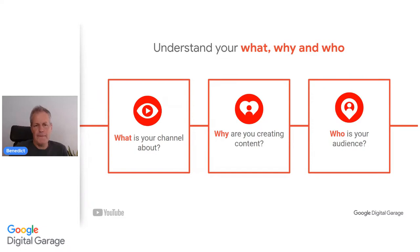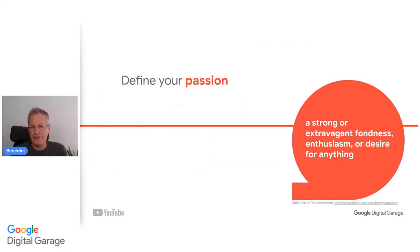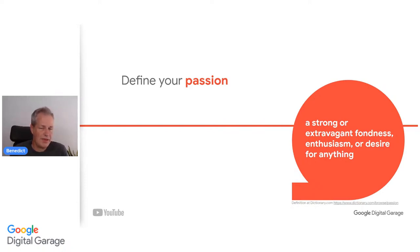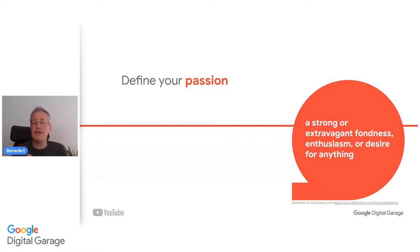Let's start with the what: define your passion. What is your channel going to be about? One of the best things about YouTube is that you can engage with and grow a community no matter what you're passionate about — whether it's comedy, sports, fashion, gaming, food, or simple everyday life. Through YouTube, you have the power to connect with a large and diverse audience with the same passions as you. Ask yourself: what are your values and beliefs? What are you passionate about? And what is your story?